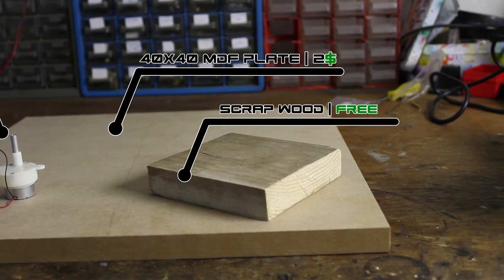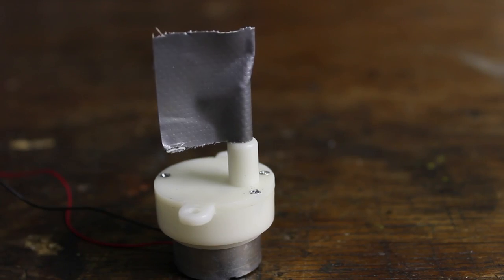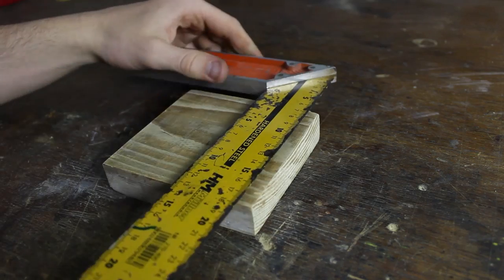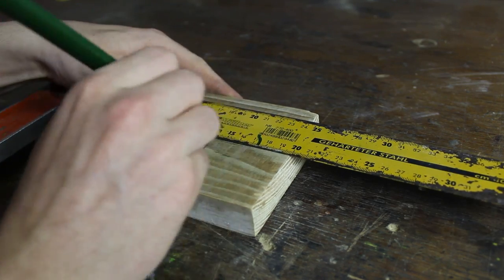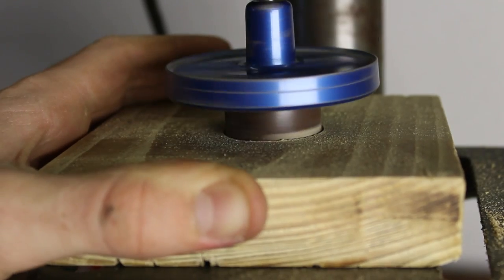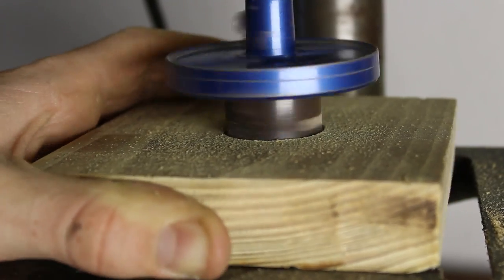Also the MDF plate I'm gonna use could be thinned down to 4mm which will work just okay. I firstly mark a center of a smaller chunk and drill a 30mm hole on a stationary drill press with leaving a 6mm hole in the middle for wires of the motor.